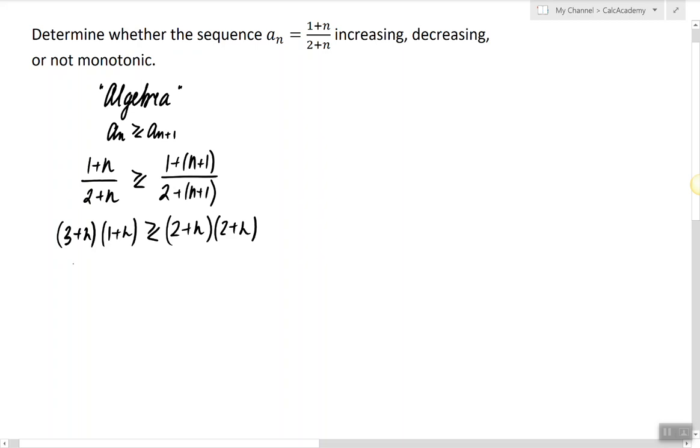And now we can distribute everything on both sides. So we have 3 plus 4n plus n squared. Here we have 4 plus 4n plus n squared. Many things cancel. And 3 is clearly less than 4. So a_n is less than a_n plus 1 for all values of n. That means the sequence is clearly increasing.